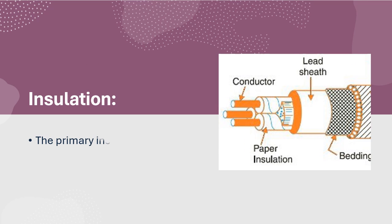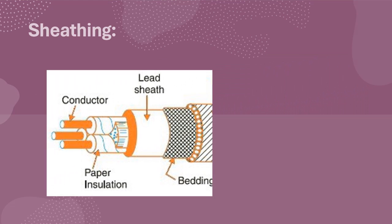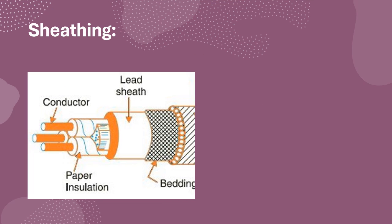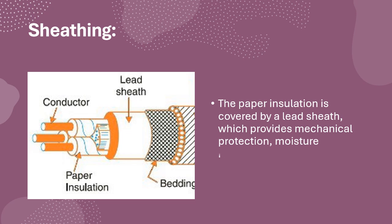The primary insulation in PILC cables is paper, which provides good electrical insulation properties. The paper insulation is covered by a lead sheath, which provides mechanical protection, moisture resistance, and helps to prevent corrosion.